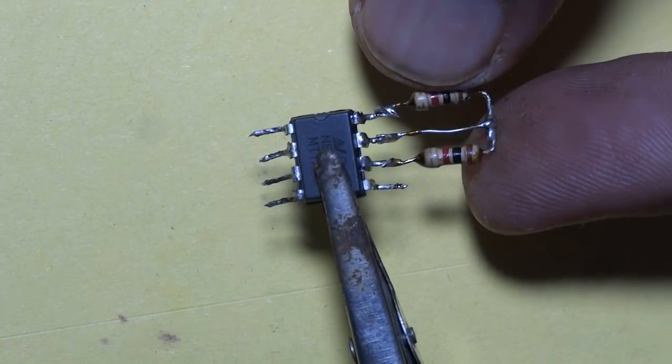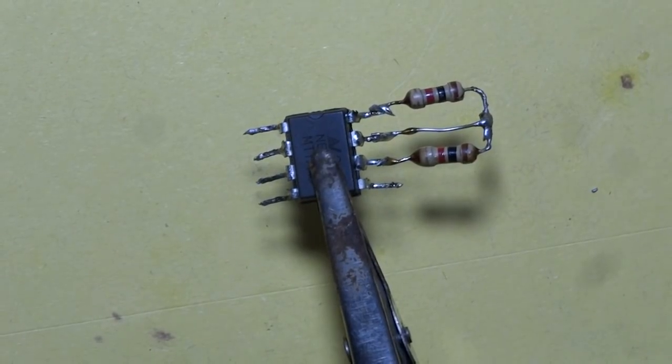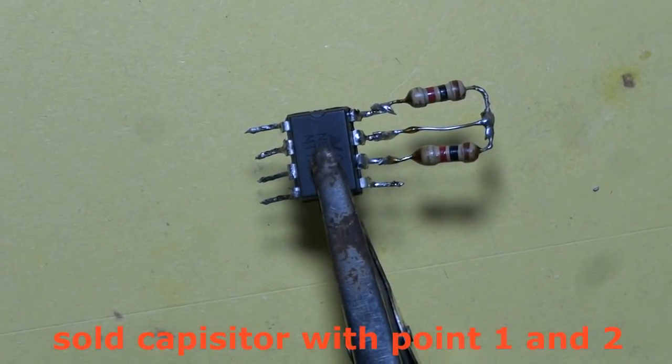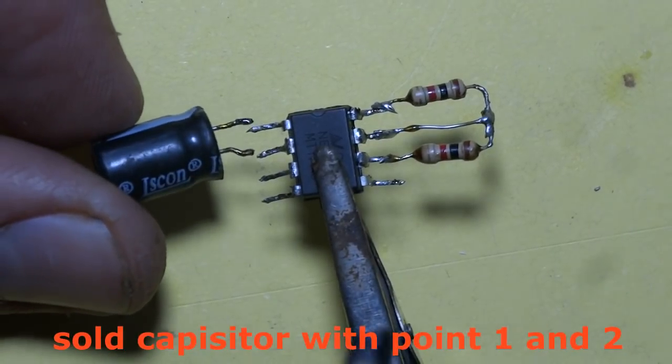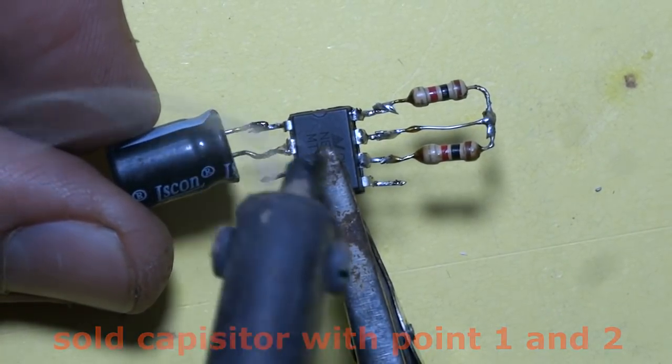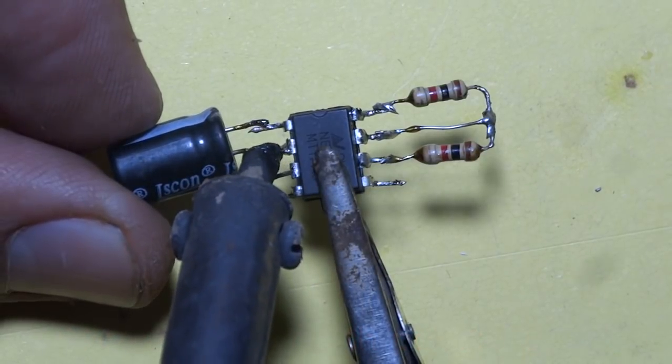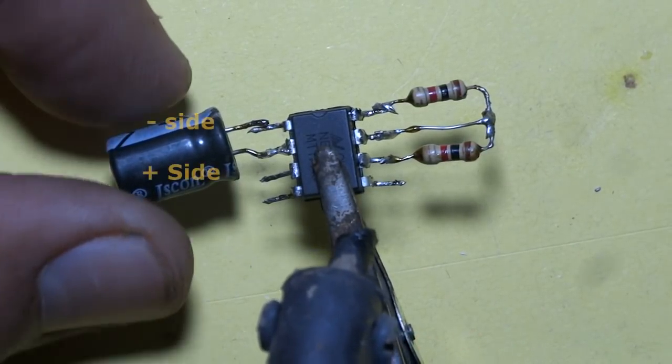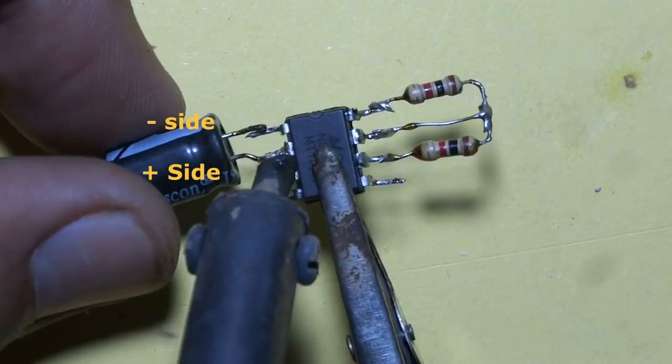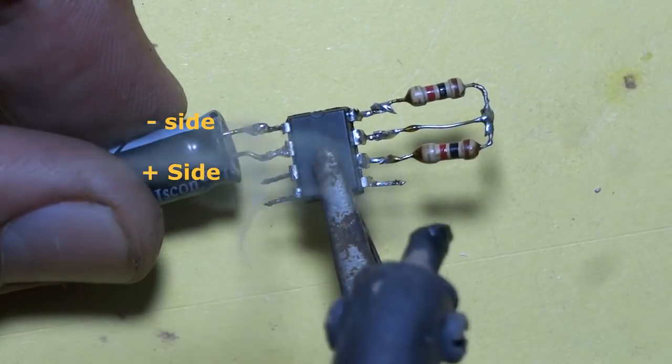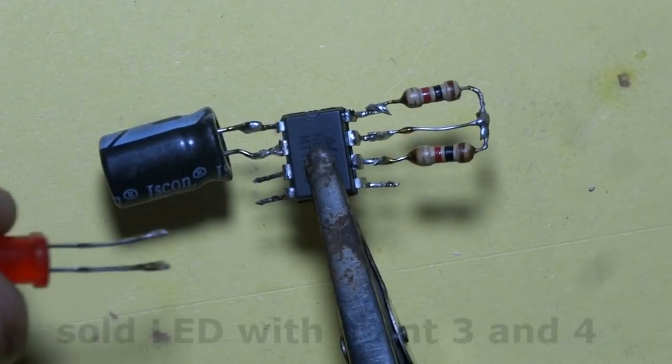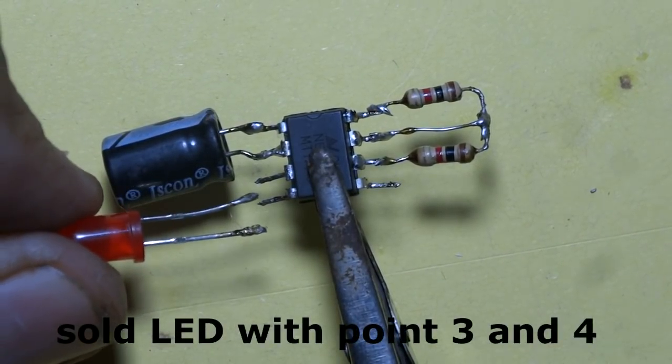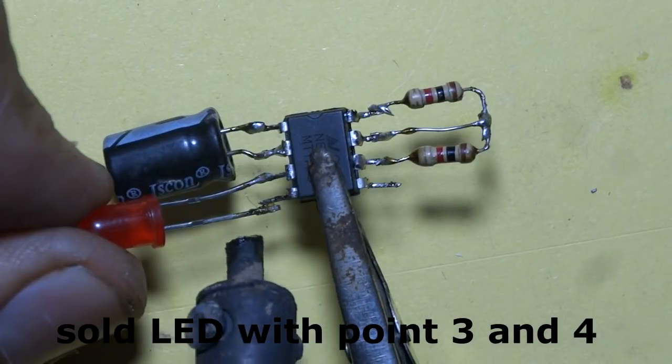Resistor has been soldered. Now we will connect capacitor with IC first point and second point. This is the second point of IC and this is the first point of IC. Now we will connect LED with third point and fourth point.